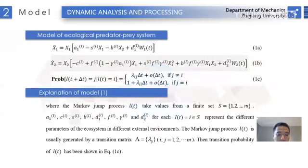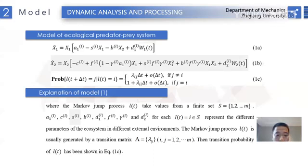Next, I will introduce the system model. The system model shown in equation 1 considers the effects of random disturbance, time delay, and sudden change of environment. The Markov jump process L(t) takes values from a finite set S equal to 1 to N. Parameters A11, C11, S11, S1, B1, D11, F1, Gamma1, and D21 for each L(t) equal to i belonging to S represent the different parameters of the ecosystem in different external environments.